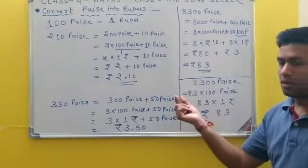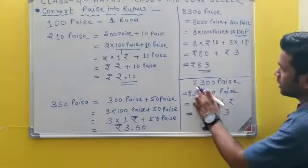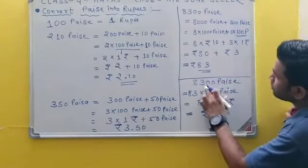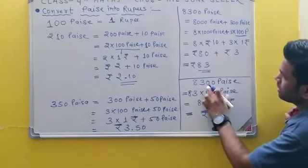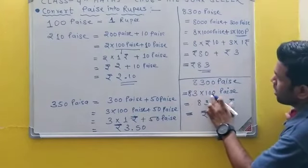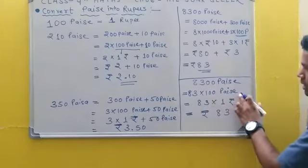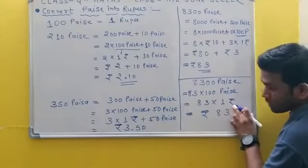The shortcut method is this: 8300 Paise, we can write this as 83 into 100 Paise. 100 Paise we can take as 1 Rupee.